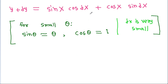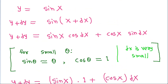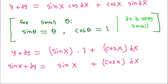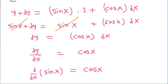So we can get y plus dy is equal to sin x and cos dx will be 1, and sin dx will be dx because sin theta is equal to theta for small angles. We have y is equal to sin x, so y plus dy equals sin x plus cos x dx. The sin x terms cancel, and we get dy is equal to cos x dx, or dy by dx is equal to cos x. Since y is equal to sin x, we get dy by dx of sin x is equal to cos x, and this is the required proof.